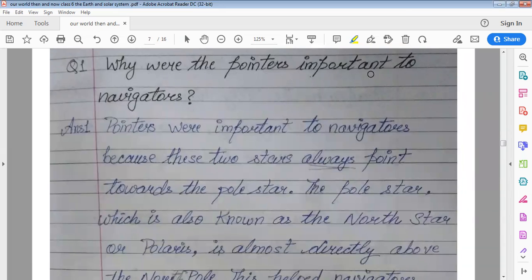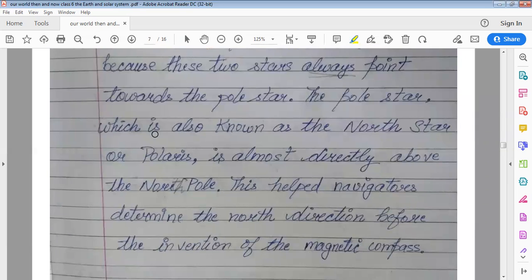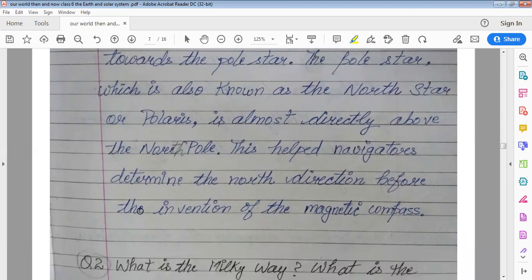Why were the pointers important to navigators? Pointers were important to navigators because these two stars always point towards the pole star. The pole star which is also known as the north star or polaris is almost directly above the north pole. This helped navigators determine the north direction before the invention of magnetic compass.